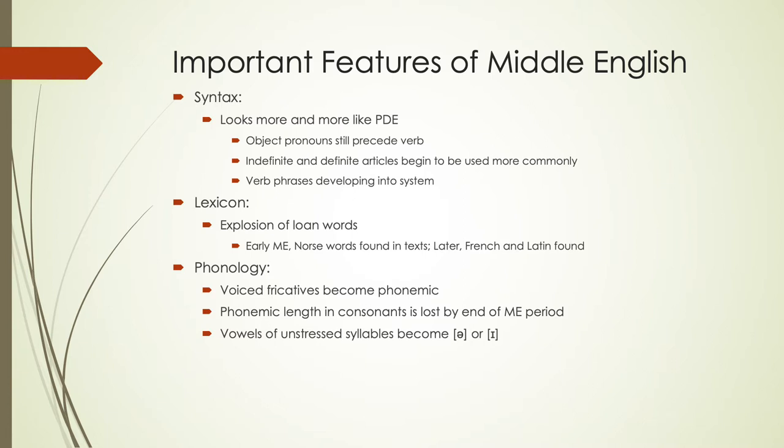With phonology, we start seeing some voiced fricatives becoming phonemic. Phonemic length in consonants is lost by the end of the Middle English period, so long consonants versus short consonants that we see in Old English are something that we start losing and are completely gone by the end of Middle English. And we start seeing unstressed syllables becoming closer to something like schwa, the 'uh' or 'ih' sounds.